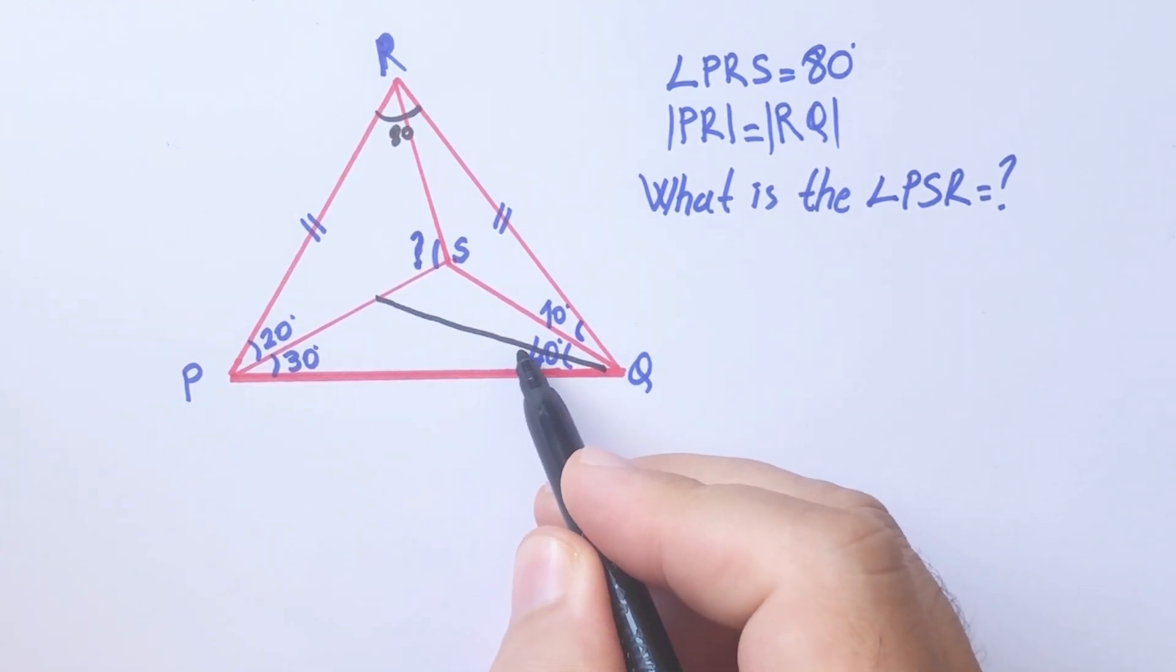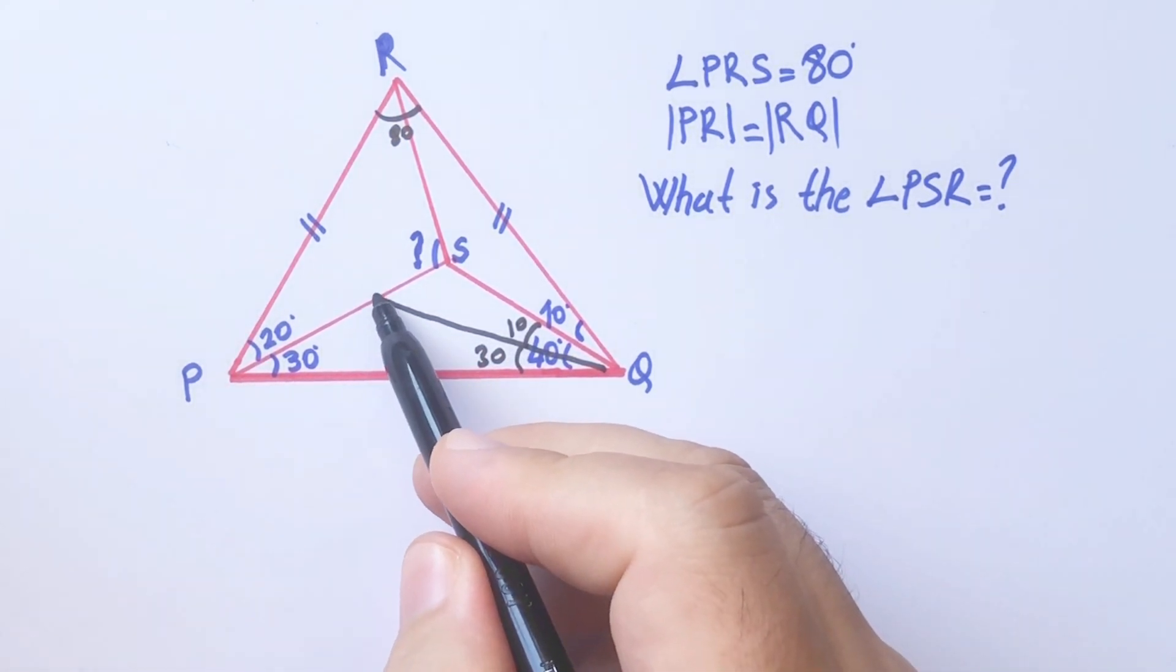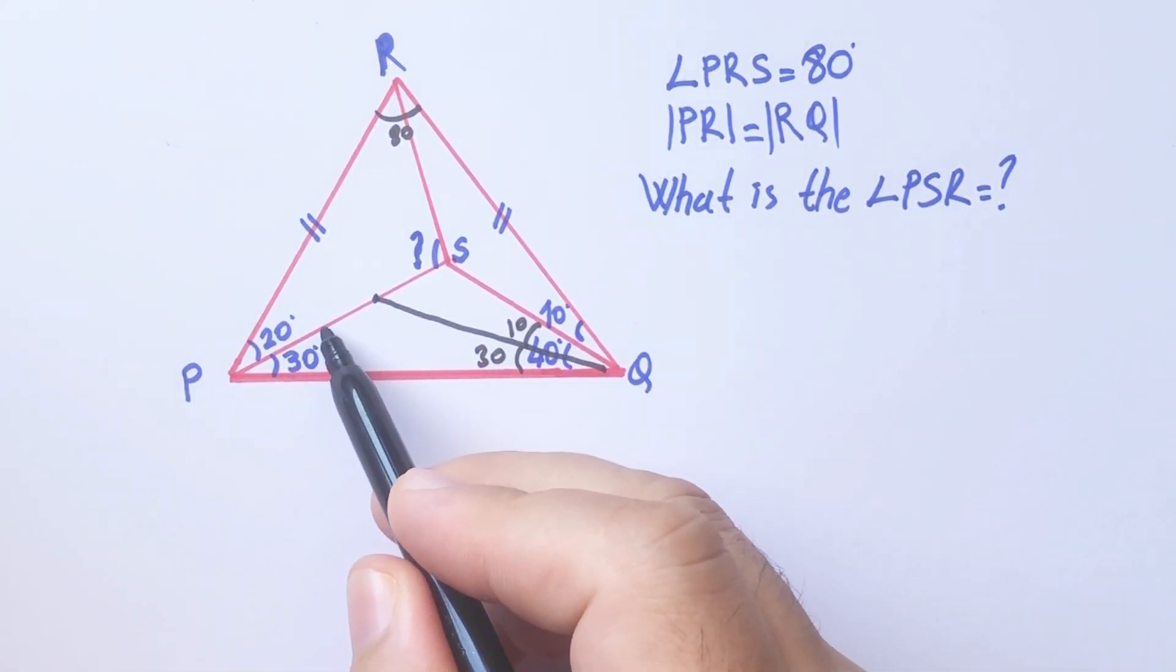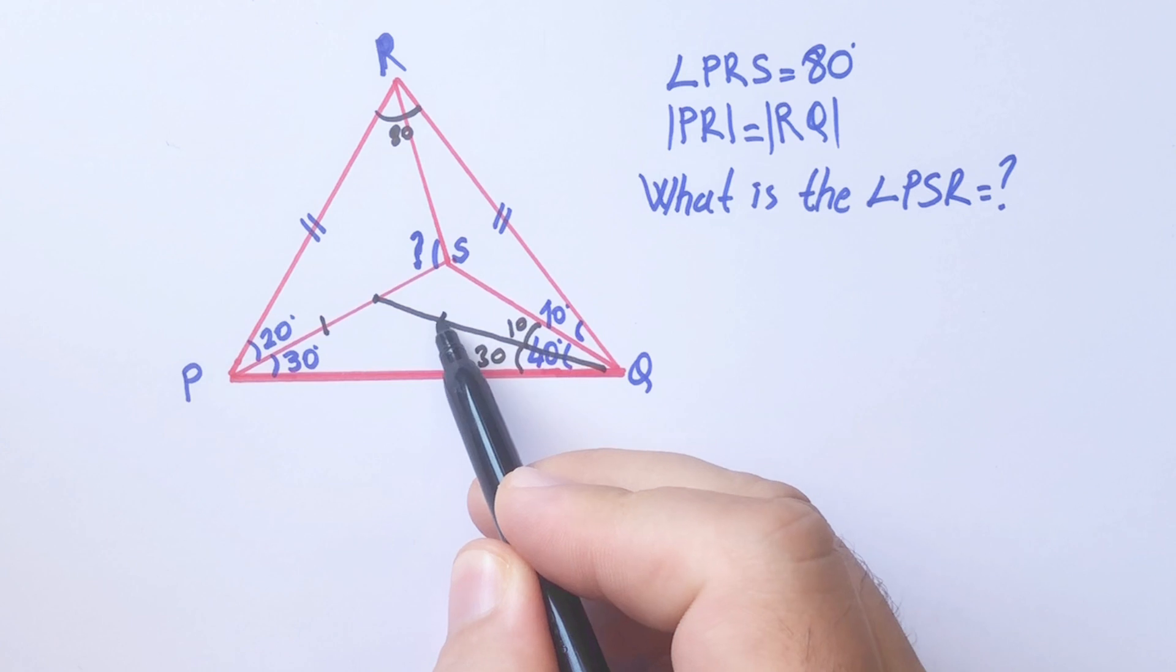If we take from this corner 30 degrees, what is left here? 10 degrees, right? Good. This point is important. These two lengths are equal, so here is 60 degrees.